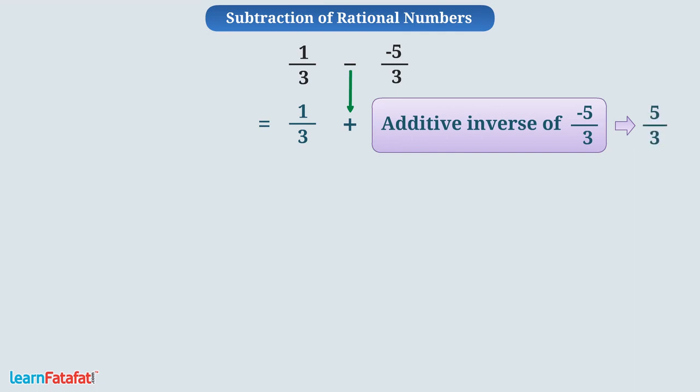For subtraction of two rational numbers, we always add the additive inverse of the rational number that is being subtracted from other rational number. So the expression becomes 1 by 3 plus 5 by 3.